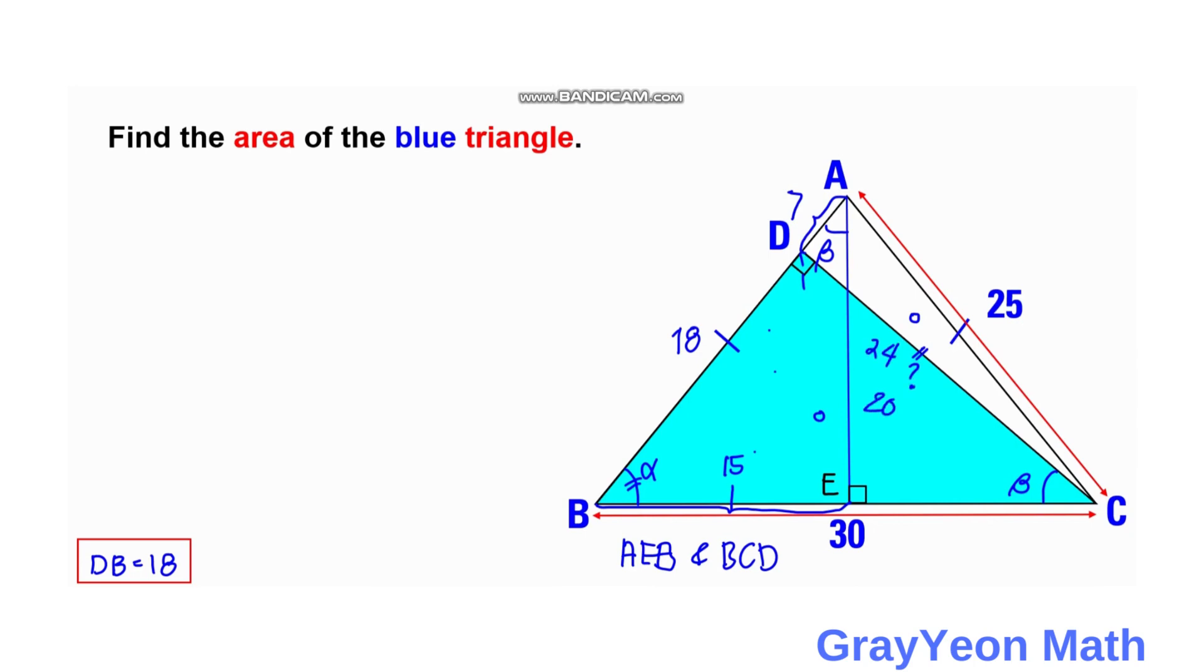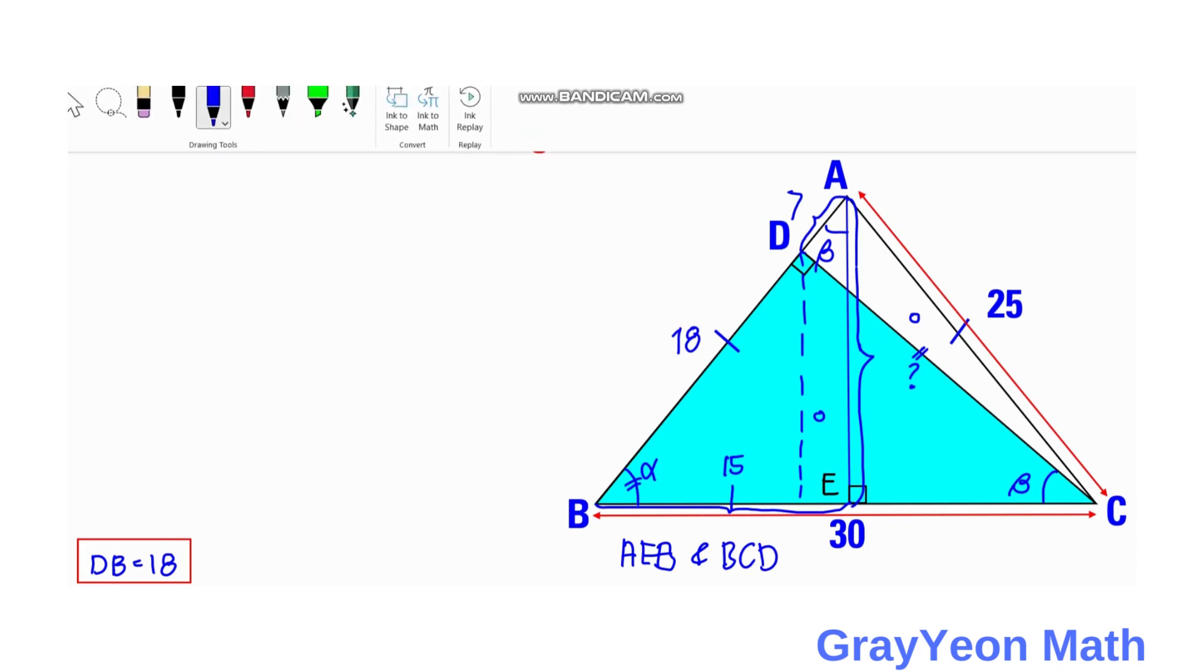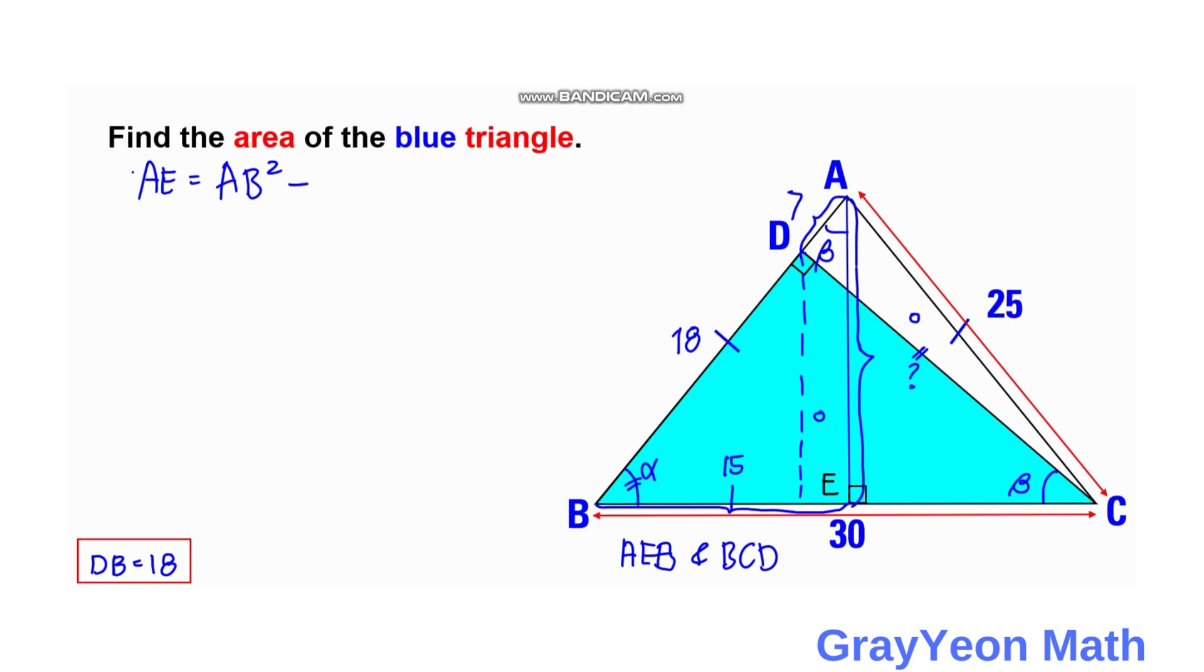Next is we find the value of this AE. AE is equal to AB squared minus BE squared, so AE squared is equal to 25 squared for AB minus 15 squared. So 25 squared is 625 minus 225, AE squared is equal to 400, and take square root of both sides, we have AE equal to 20.